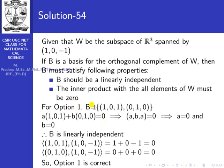Now check the inner product. Inner product of (1,0,1) with (1,0,−1) equals 1×1 + 0×0 + 1×(−1) = 1 − 1 = 0. Inner product of (0,1,0) with (1,0,−1) equals 0×1 + 1×0 + 0×(−1) = 0. So the inner product of all elements of the set with the element of W equals 0. Therefore this set is the basis for the orthogonal complement of W, and option 1 is the correct option.